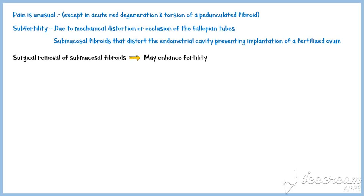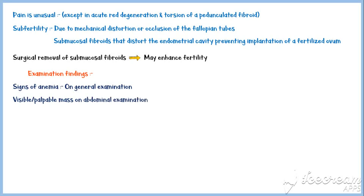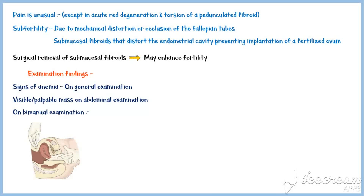Apart from these symptoms, common examination findings include signs of anemia on general examination, a visible or palpable mass on abdominal examination, and on bimanual examination, an enlarged, firm, asymmetric uterus may indicate the presence of fibroids.